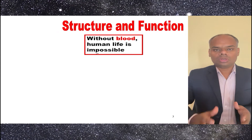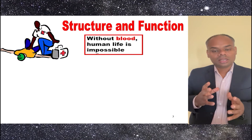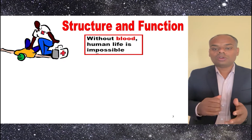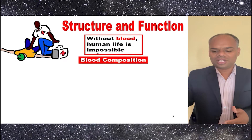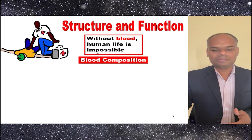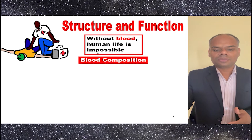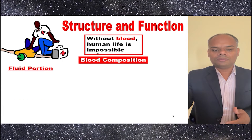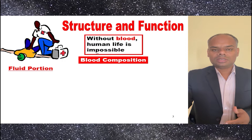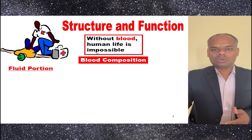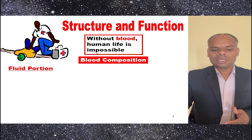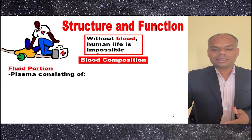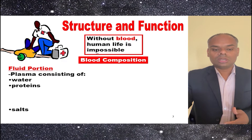Do you think that life is possible without blood? I think no, it is not possible. So now comes the composition of blood. It is basically divided into two types: the fluid portion and the cellular portion.